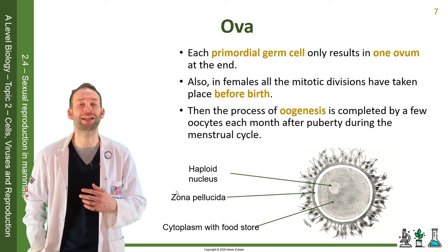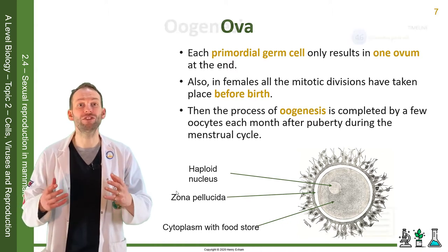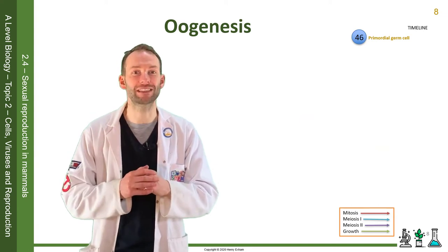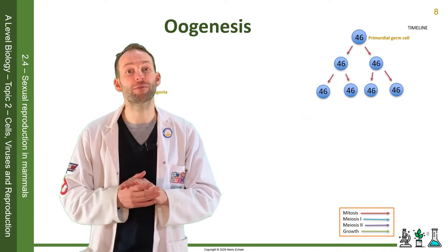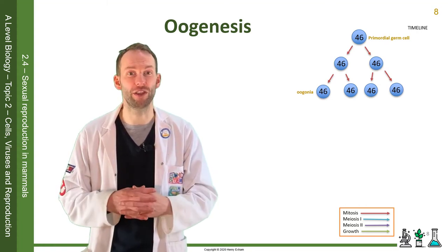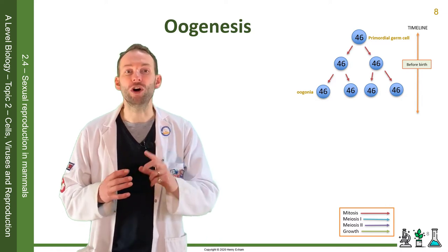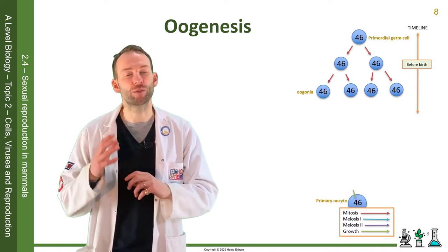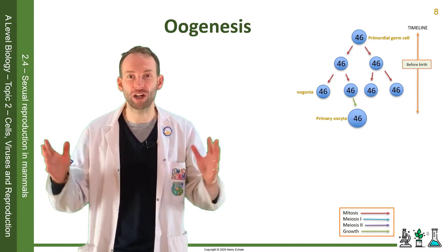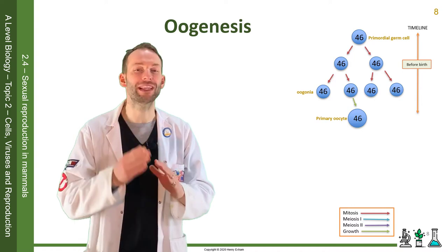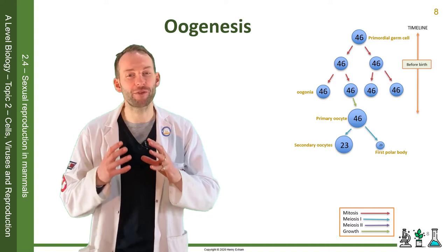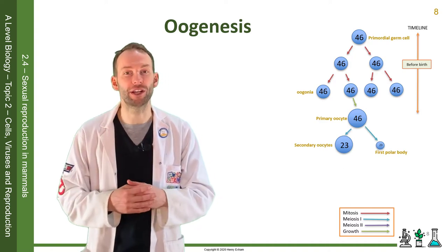In oogenesis, you start again with a primordial germ cell, just like in spermatogenesis. This divides a few times by mitosis to form oogonia, and this happens before birth. Only one grows bigger and is then called the primary oocyte — the others actually break down and aren't used at all. The process of oogenesis is then completed by a few oocytes each month after puberty starts, during the menstrual cycle. Once a month, a primary oocyte undergoes the meiosis divisions.